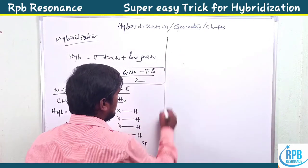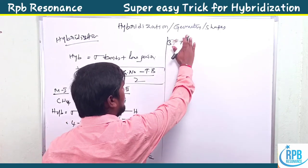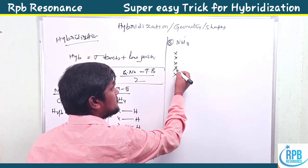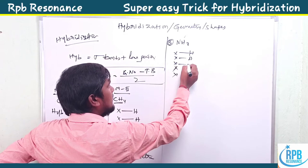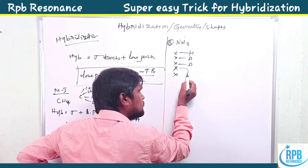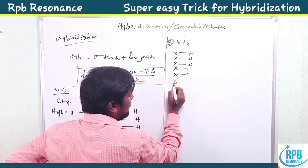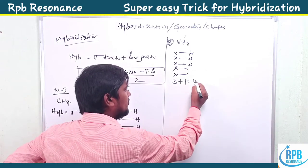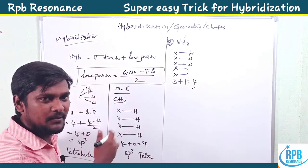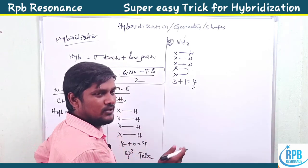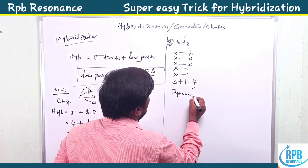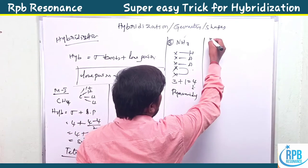For ammonia NH3, nitrogen has group number five. Three hydrogens share three electrons; the remaining two electrons form one lone pair. So three sigma bonds plus one lone pair gives four — geometry is tetrahedral, but the shape of the molecule with three plus one is pyramidal. The shape of ammonia is pyramidal.